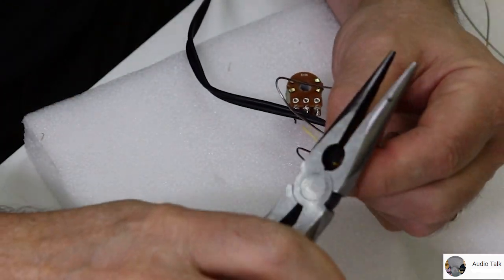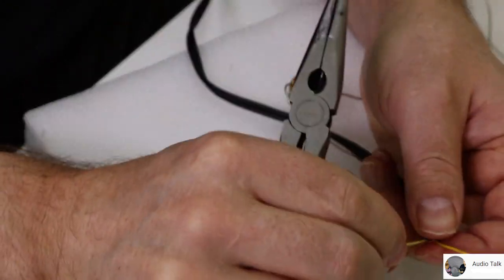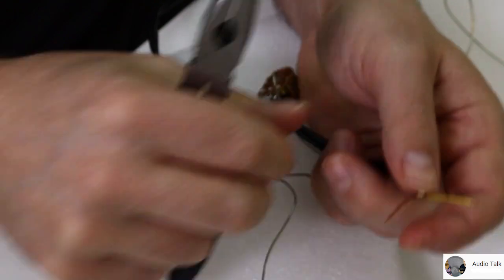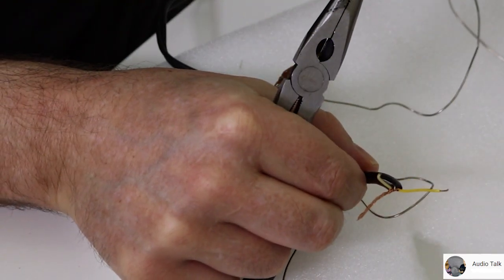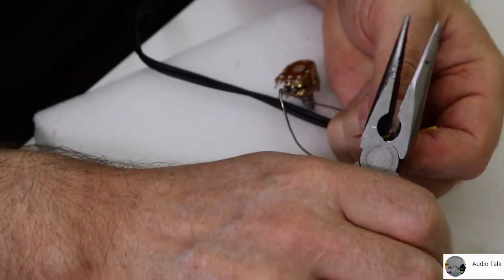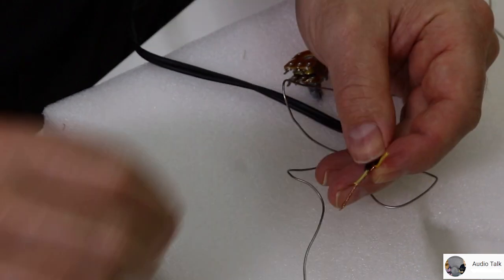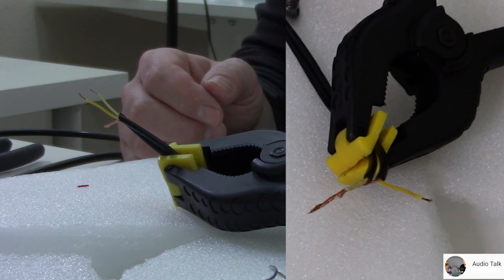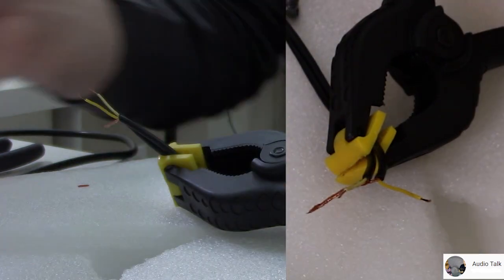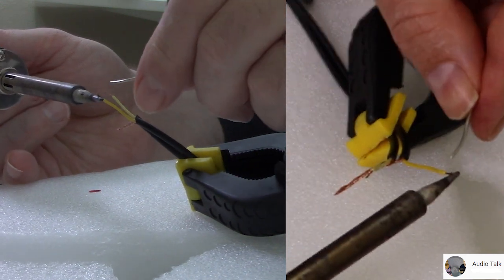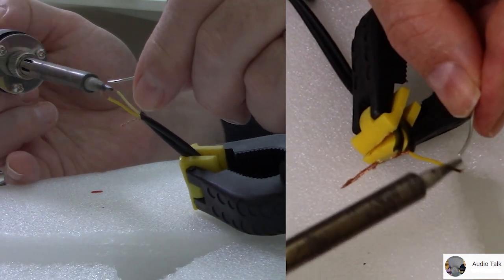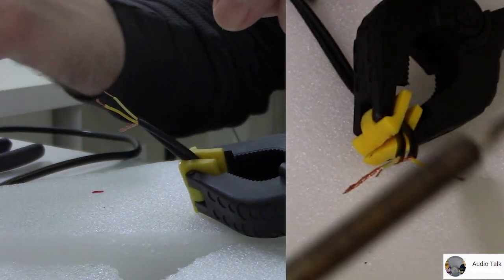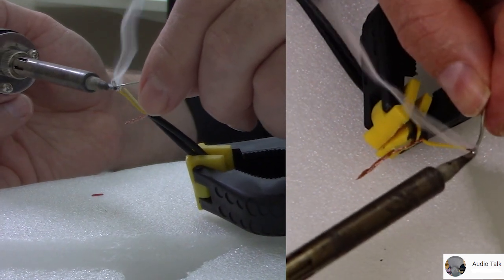Try not to take too much of the insulation off of the plus lines. You want the insulation of the wire to get as close to the potentiometer as you possibly can, so the wires are protected from not shorting out on each other from the other connections once it gets really tight in there on the potentiometer itself.